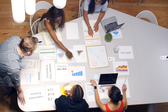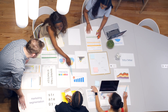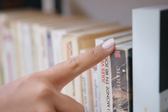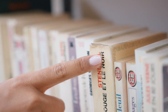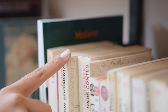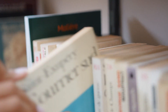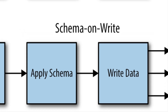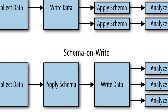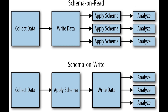To start with, a data warehouse is a structured repository of data that is optimized for querying and analysis. It is a central location that collects data from various sources and transforms it into a consistent format that can be used for business intelligence and decision-making purposes. Data warehouses are typically designed with a schema-on-write approach, which means that data is pre-modeled and organized before it's loaded into the data warehouse.